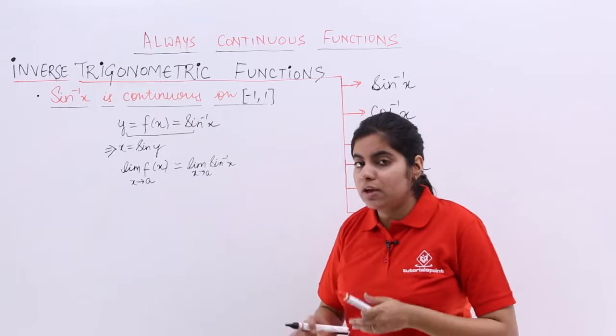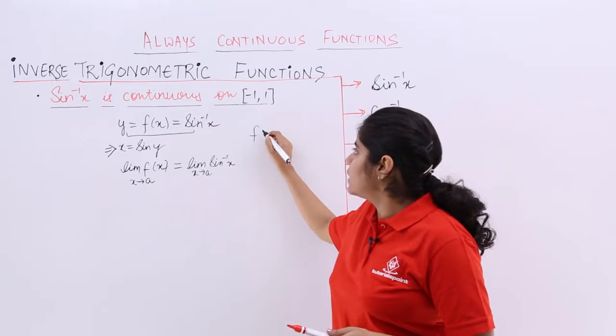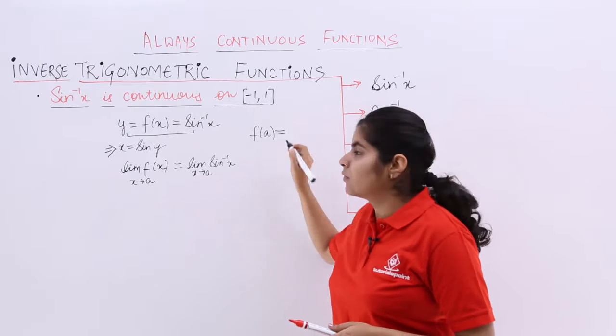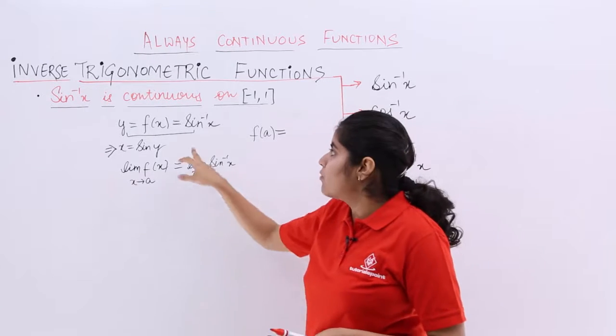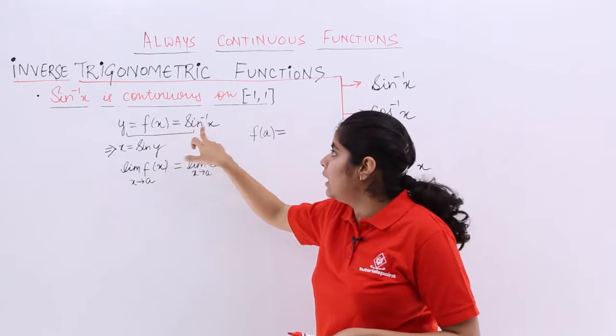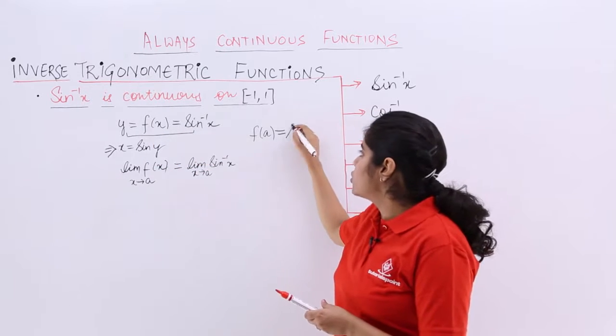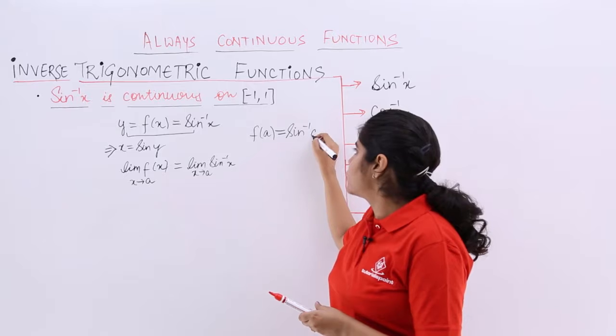And what is, if limits value, okay, what is f of a? f of a, f of a means here it should be a, so here also it should be a. So, it is sine inverse a.